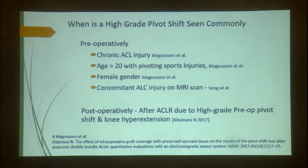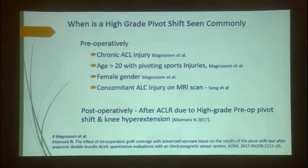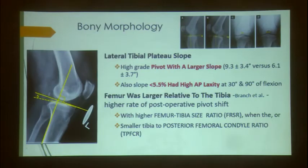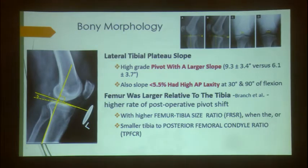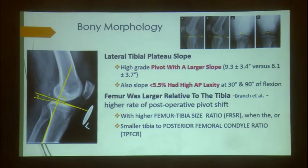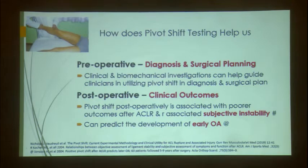High-grade pivot shift is commonly seen preoperatively in: chronic ACL tears, age over 20 with pivoting sports injuries, female gender, concomitant anterolateral corner injury on MRI. Postoperatively, a persistent high-grade pivot shift — especially in hyperextension cases — predicts failure. Regarding bony morphology, an excessively high or large tibial slope contributes to abnormal lateral condyle pivoting, and this must be evaluated.